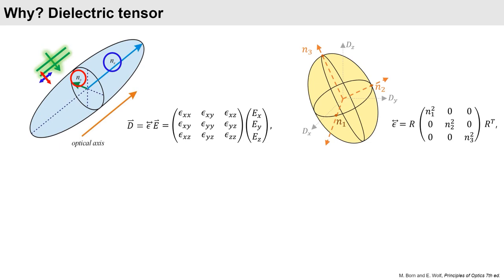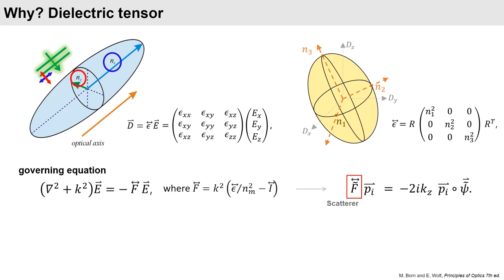Diffraction of light is governed by a vectorial wave equation and its solution is shown on the right side. The F tensor, called the scattering potential tensor, includes the dielectric tensor. Pi vector shows polarization vector of illumination and psi vector denotes a measured light wave.